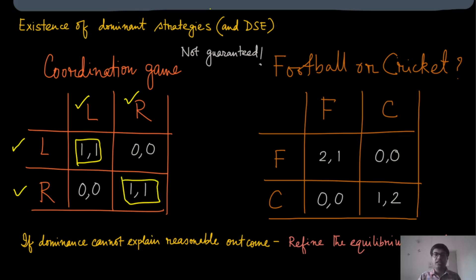If we ask what is the dominant strategy for player one in the coordination game: when player two plays L, the best response for player one is also L. But when player two plays R, the best response for player one is also R. So there does not exist one single strategy which is better than the other irrespective of what the other player is playing.